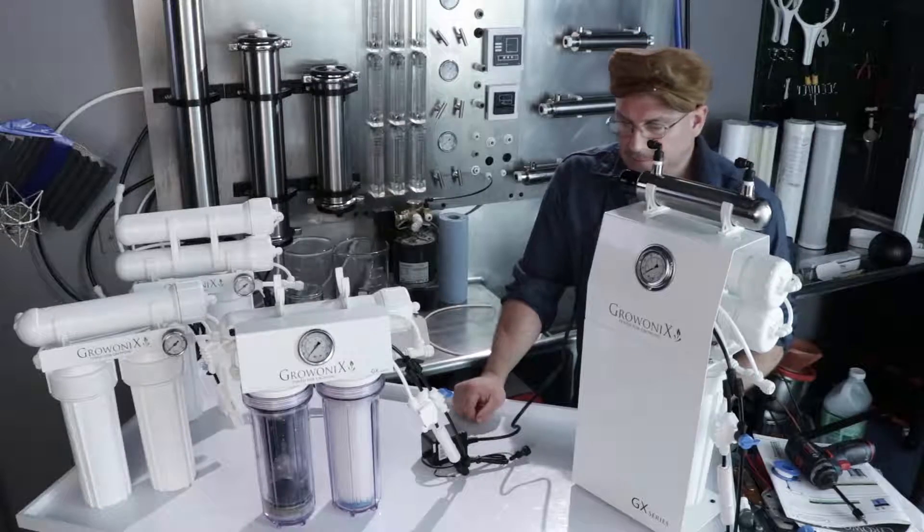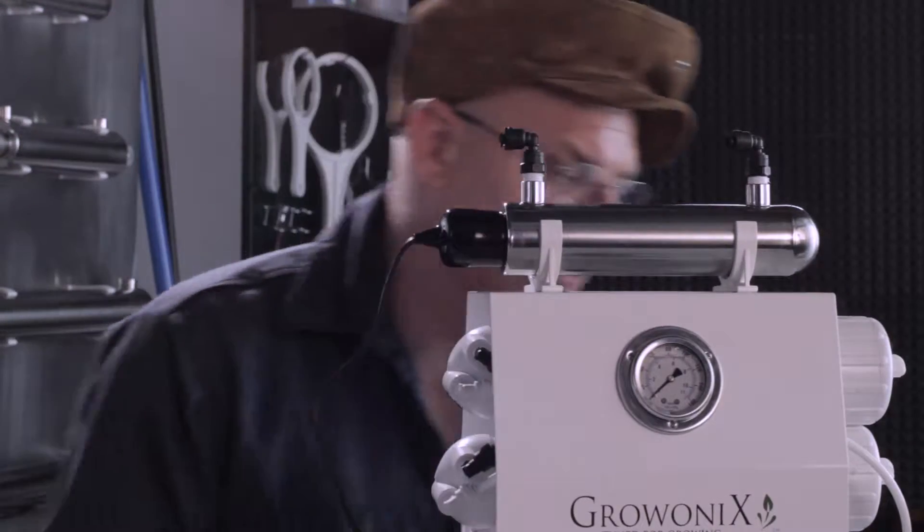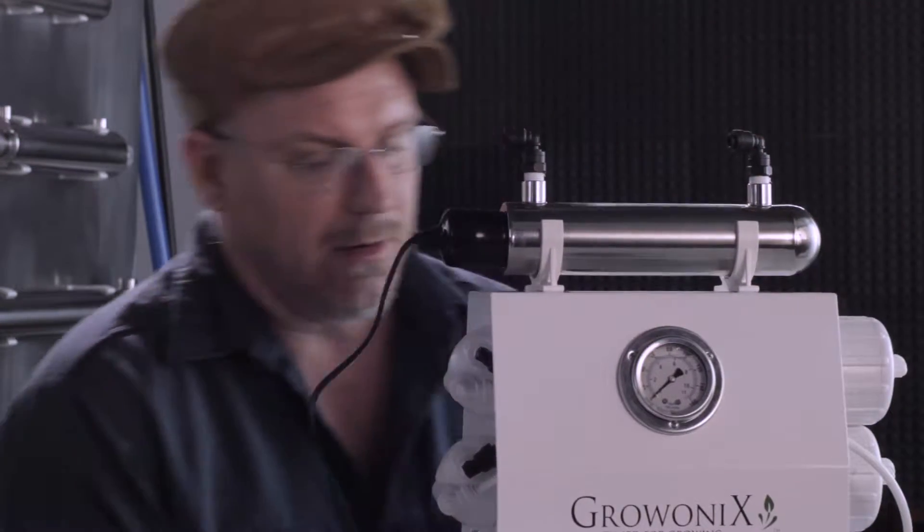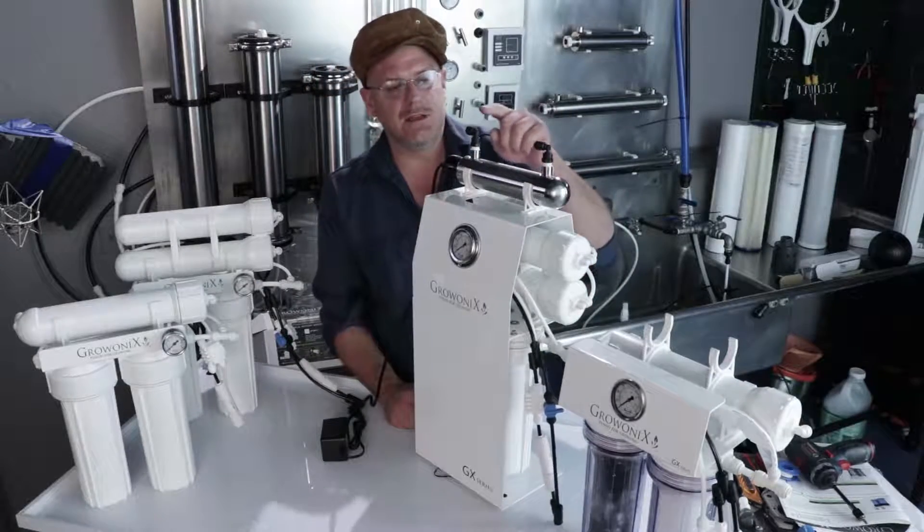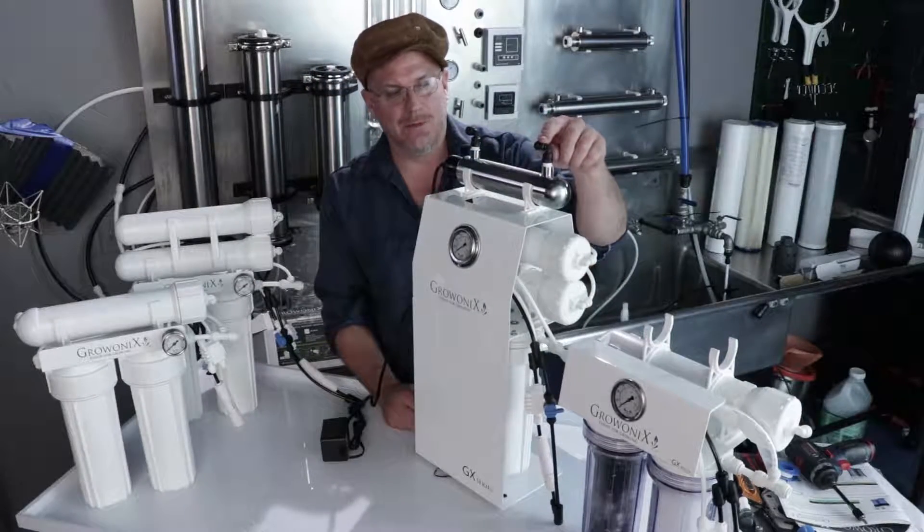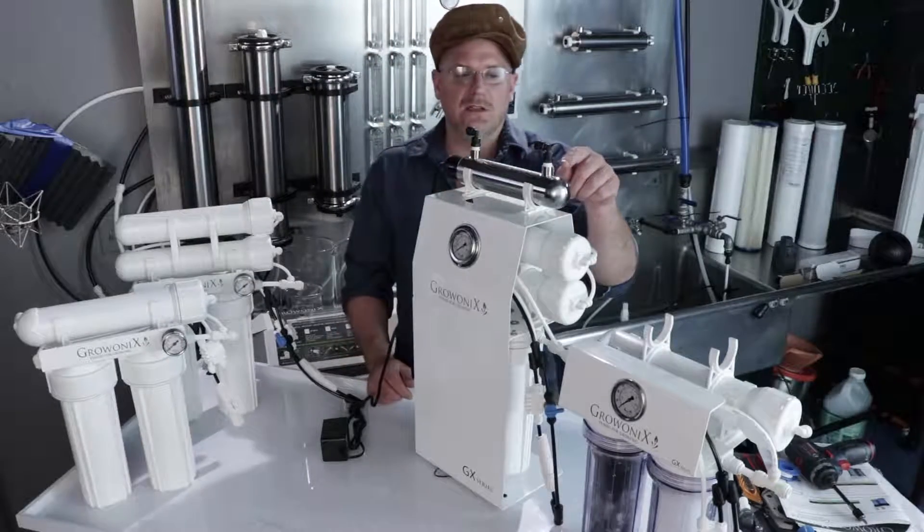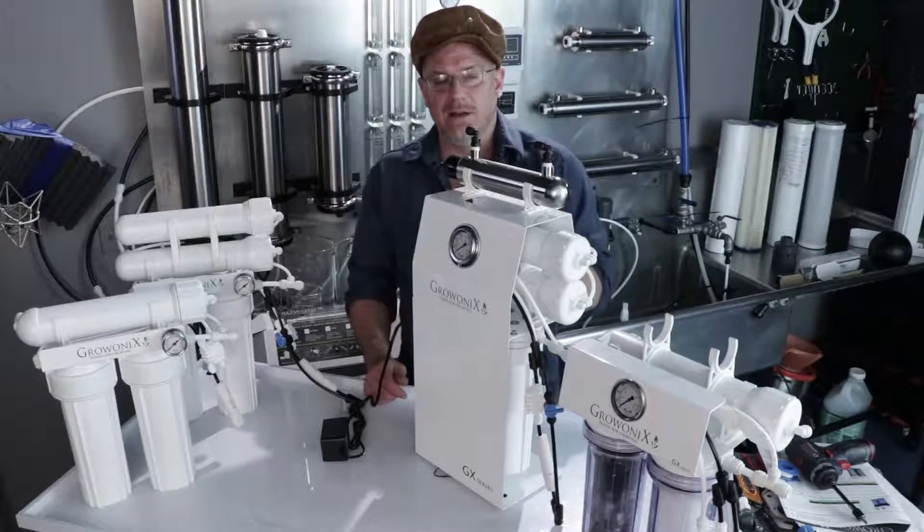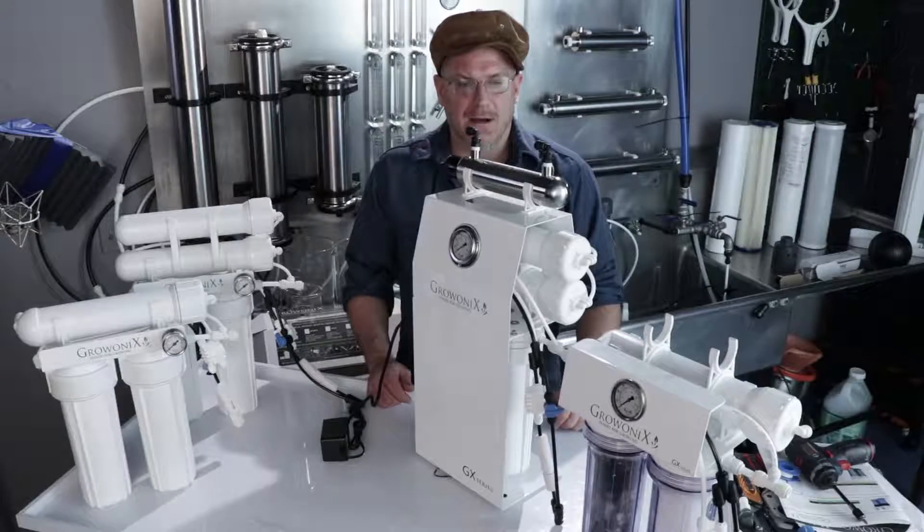And it's just that simple. So running the plumbing to a UV filter is quite simple. There is no dedicated input and output. These are bi-directional. As long as the water goes in one end and comes out the other, the UV is going to do its job.